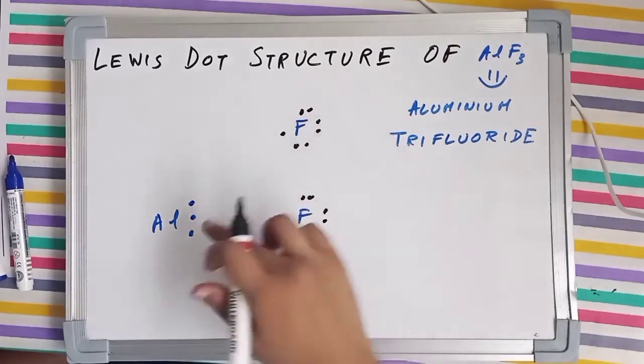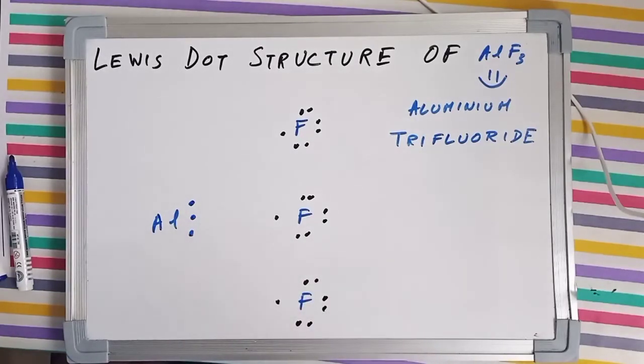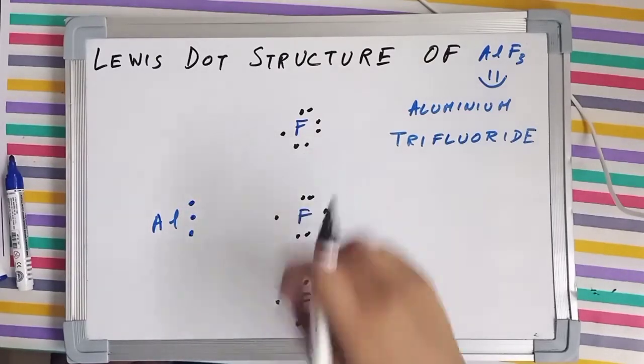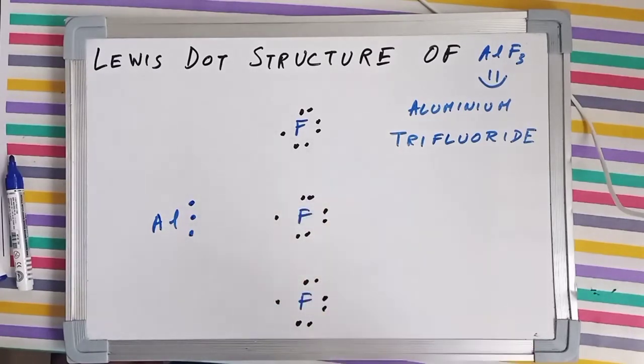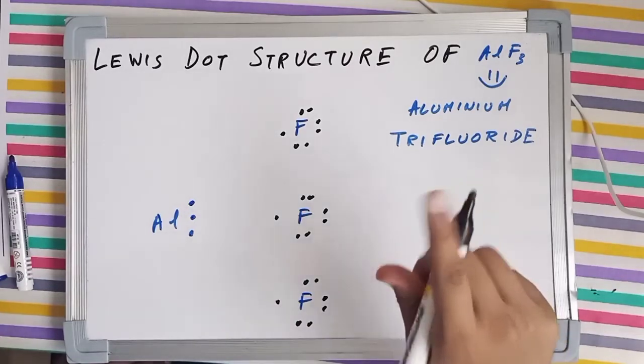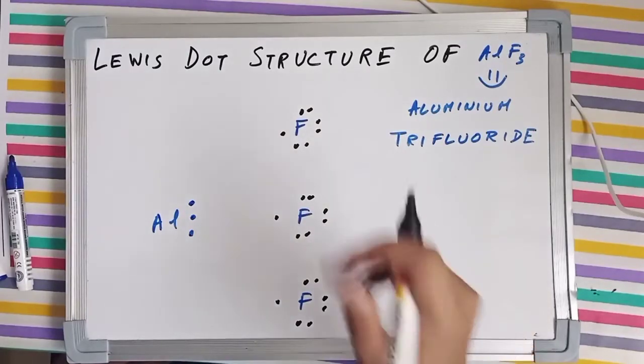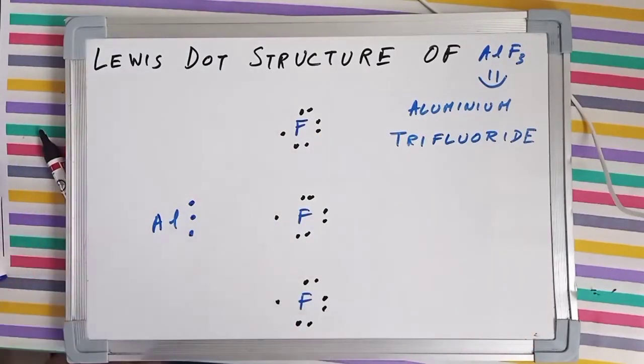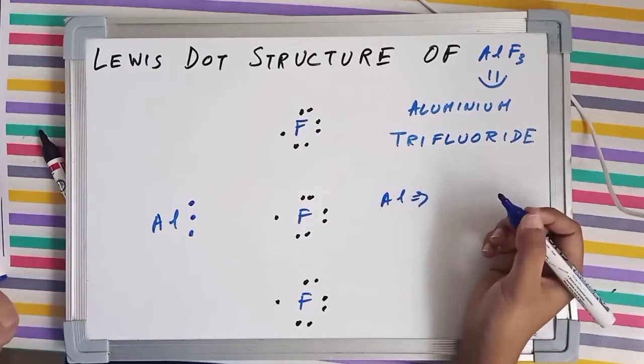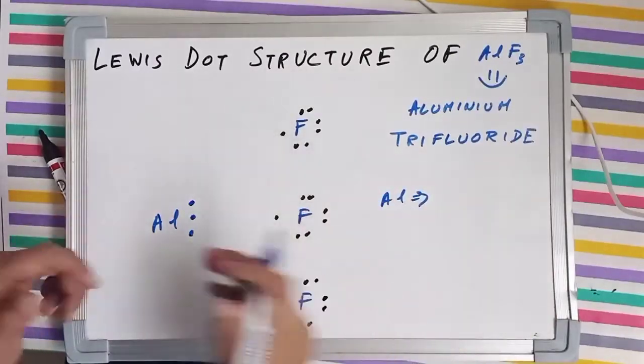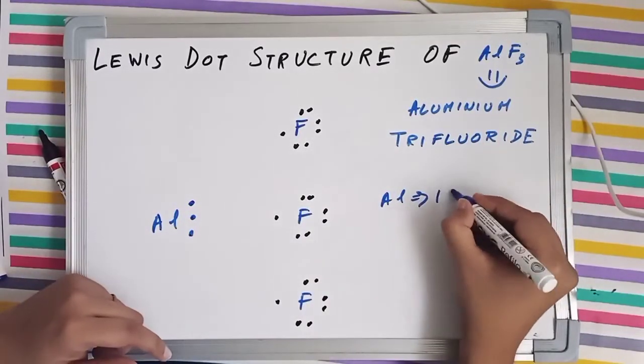Now what happens is this fluorine asks aluminum, hey aluminum why don't you give me an electron? Then aluminum asks the first fluorine, why should I? Fluorine says I have got 2 brothers, F2 and F3 with me, and they are also going to similarly take single electrons from you. So aluminum says yeah so what, I will gain 3 positive charges by that. But fluorine says, see aluminum you are so stupid. If you lose those 3 electrons you will gain an inert configuration.